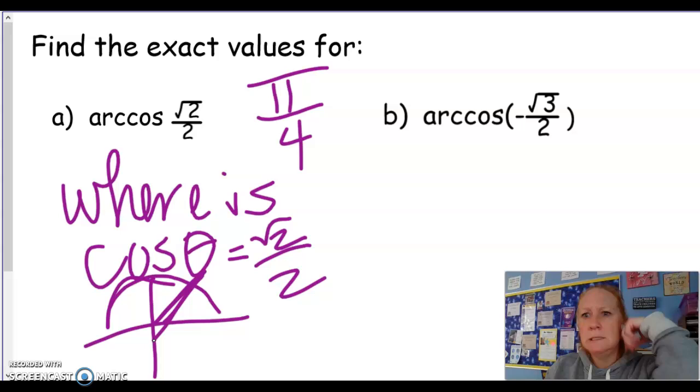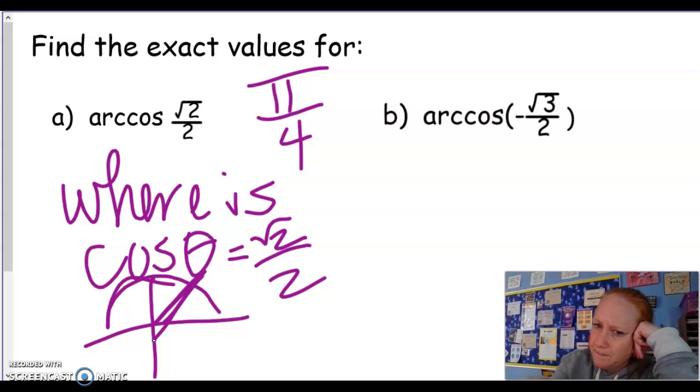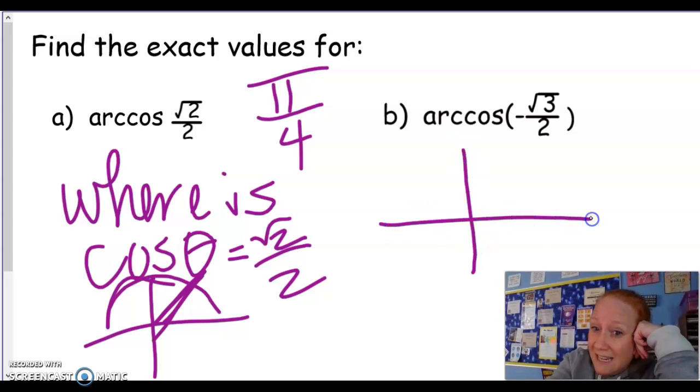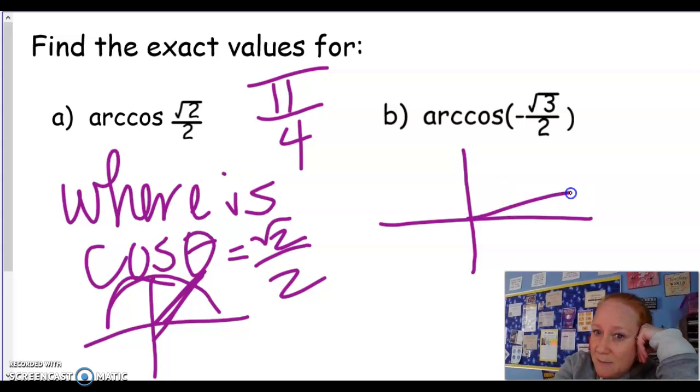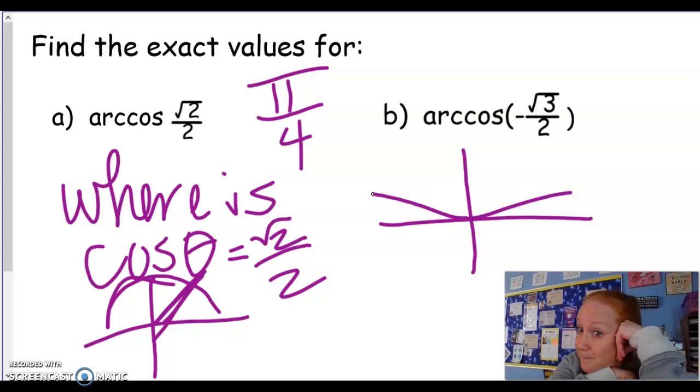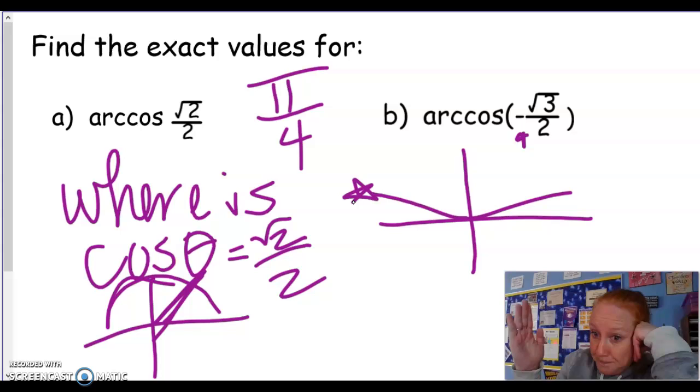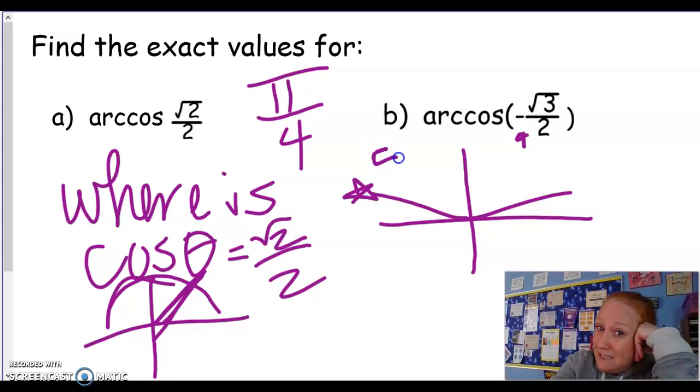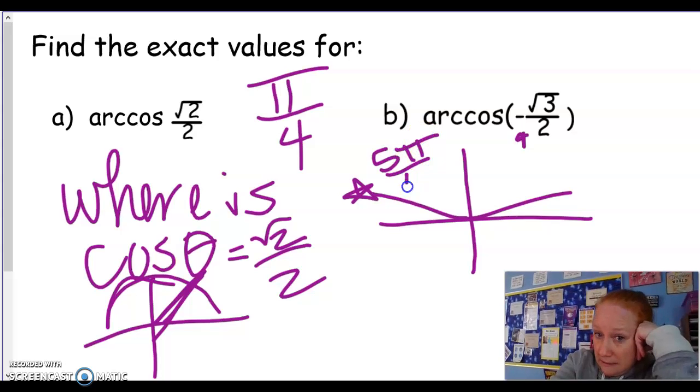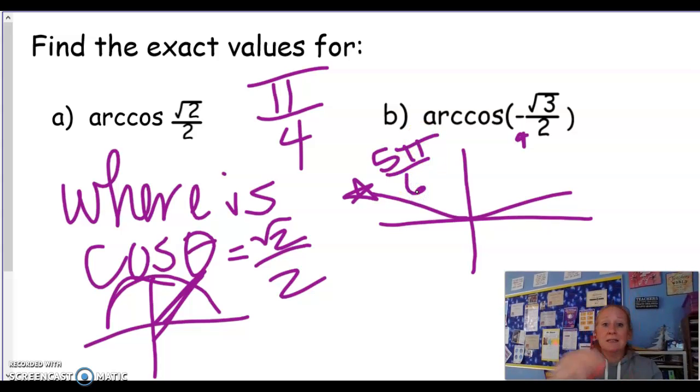This one says -√3/2. So we're going cosines, that's going to be your π/6s. And since it's negative, it's got to be back here because the x value is negative over there. So 5π/6, because this would be 6π/6 because one whole is 6/6. So 5π/6.